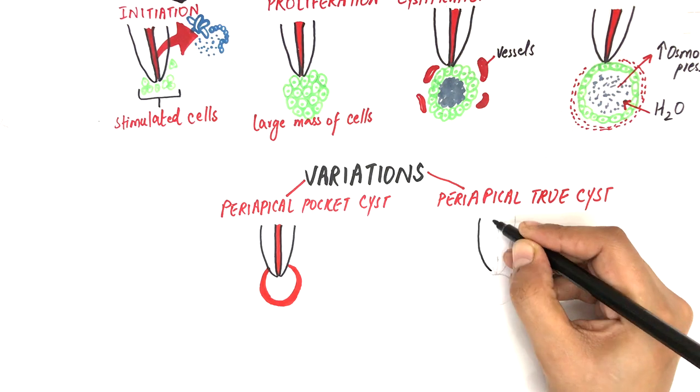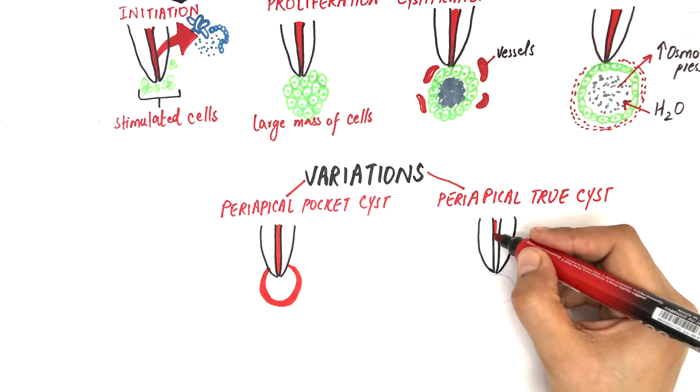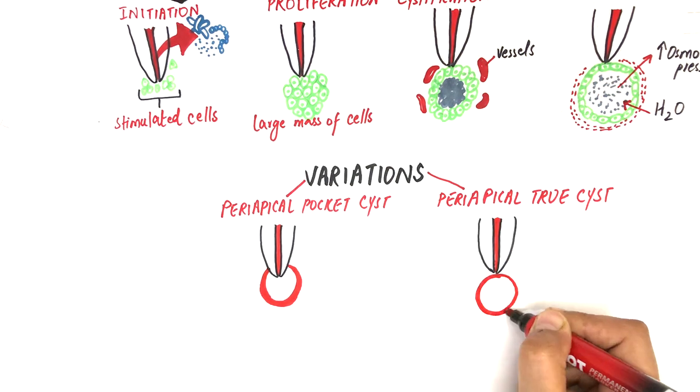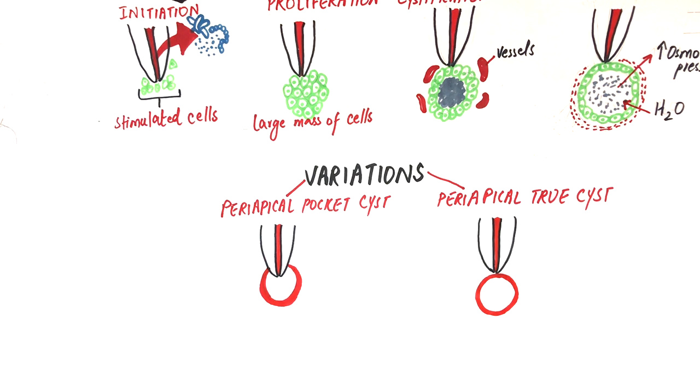The periapical true cyst is characterized by an epithelial-lined bag-like structure that is adjacent to but separated from the tooth apex. Or let's say the apex of the tooth does not extend into the cystic lumen.